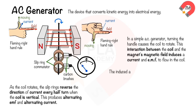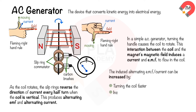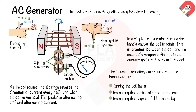The induced current and EMF in an AC generator can be increased by turning the coil faster, increasing the number of turns on the coil, or increasing the magnetic field strength by using a stronger magnet.